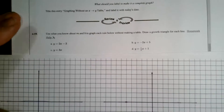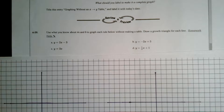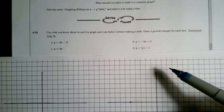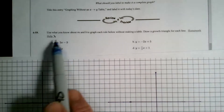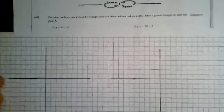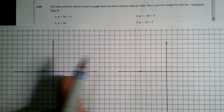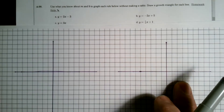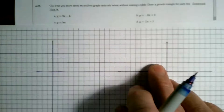Hi everybody, Mr. Dell here. I'm going to get into graphing these lines based on these rules without using a table, thinking about the information given within the rule itself and getting the graph complete that way. I've got my axes already created, a couple sets of axes. I'll put A and B on one and C and D on the other.